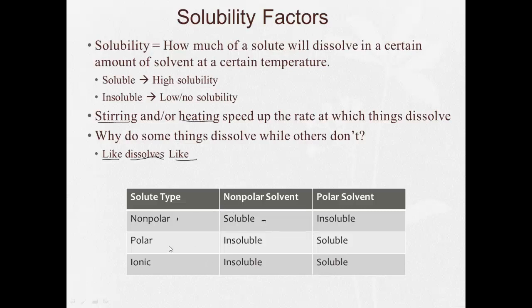If we try to dissolve something polar into something nonpolar, it's going to be insoluble. Now, if you see here, things that are ionic and polar are going to behave similarly at this point. So an ionic substance trying to dissolve into a nonpolar solvent will be insoluble. Try to dissolve a nonpolar solute into a polar solvent, insoluble. Polar into polar, soluble. Ionic into polar, soluble. Why? Because like dissolves like.